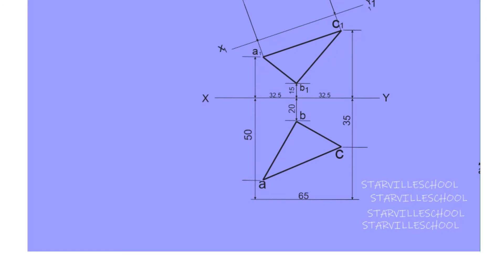With your ruler, set it out correctly. We have to draw parallel lines to B1C1 just as you've seen me do. That's the parallel line to line B1C1.